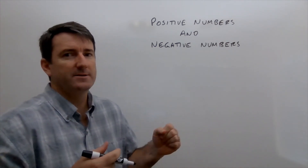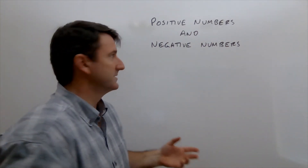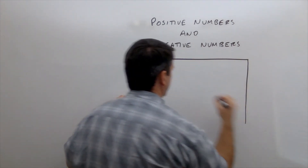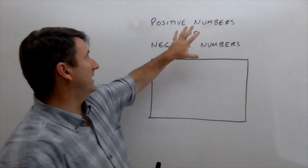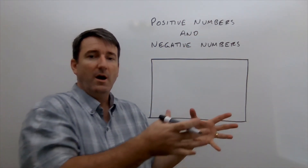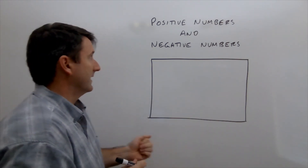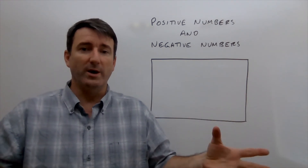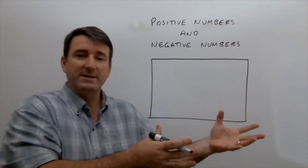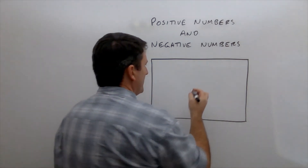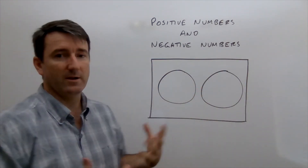Our second example asks us to draw a Venn diagram showing the relationship between the set of positive numbers and the set of negative numbers. We start with our rectangle, then ask: is one a subset of the other? Are all positive numbers also negative, or vice versa? No, clearly not. Are these sets disjoint — is it true that there are no positive numbers that are also negative numbers? Yes, that is true. So these are going to be disjoint sets, and we draw two circles that do not touch one another.